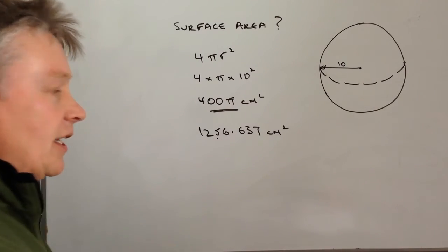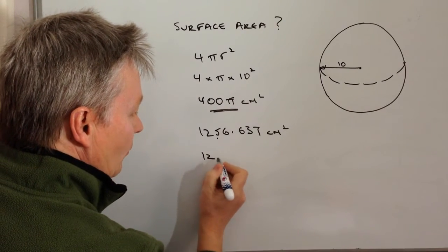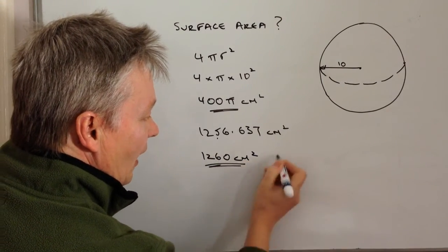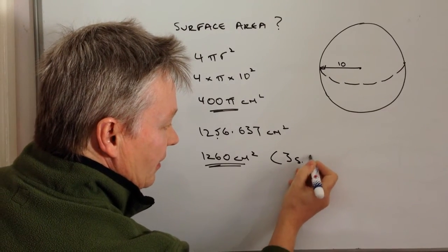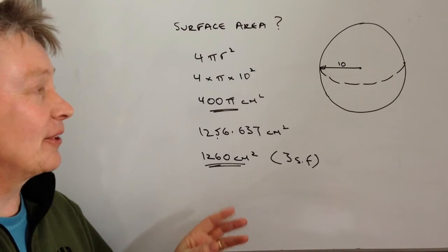We look at the third number here which is 5. It's going to change because of the 6 that's after it, so that would be 1260 centimeters squared, and that's to three significant figures. I hope that's okay for you. Please add a comment, like the video, subscribe to the channel.